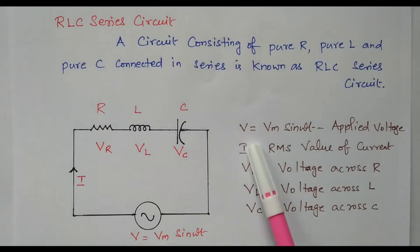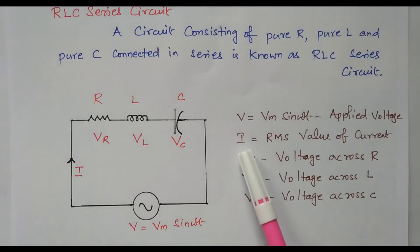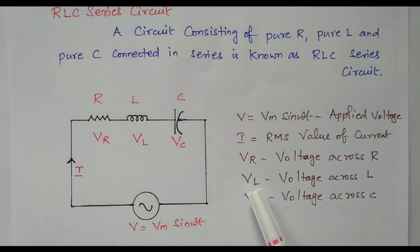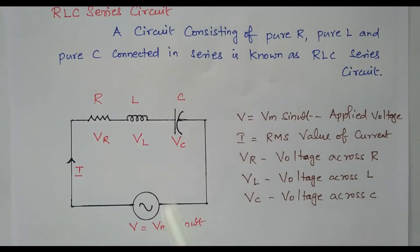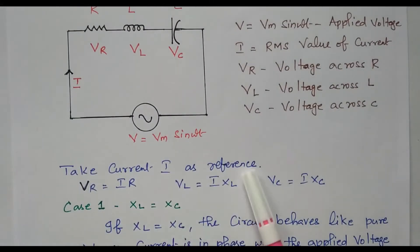V equal to Vm sin omega t is the applied voltage. I is the RMS value of the current. Vr is the voltage across the resistor R. Vl is the voltage across the inductor. Vc is the voltage across the capacitor. The same current I is flowing through all three elements — resistor, inductor, and capacitor.